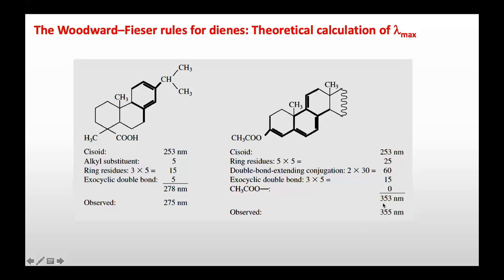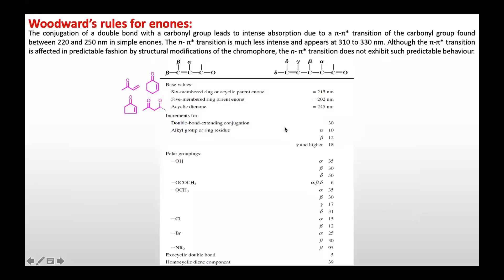The Woodward-Fieser rule successfully predicted the lambda max for this molecule. Now we will also do calculations for enones. The conjugation of a double bond with a carbonyl group leads to intense absorption due to π→π* transition of the carbonyl group, found between 220 and 250 nanometers in simple enones. The base value for a six-membered ring or acyclic enone is 215 nanometers, while for a five-membered ring enone it is 202 nanometers, and for an acyclic dienone it is 254 nanometers.